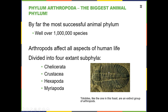The trilobites, as mentioned in an earlier chapter, appeared at the beginning of the Paleozoic as a result of the Cambrian explosion, and then went extinct at the end of the Paleozoic in the Permian extinction. But they have a segmented body style, which is one of the main characteristics of the arthropods.